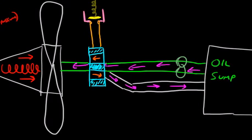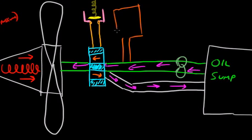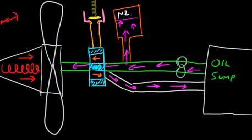The only thing that remains is to draw the unfeathering accumulator. The unfeathering accumulator sits here and it stores oil pressure. Stored oil pressure moves into the accumulator whenever the oil pump is running, and it just builds up pressure inside. What you've got on the other side of the accumulator is nitrogen — stored nitrogen pressure. When the prop goes into feather, the unfeathering accumulator seals off. So you've got a bunch of stored pressure in the unfeathering accumulator that doesn't have a chance to flow back to the oil sump.